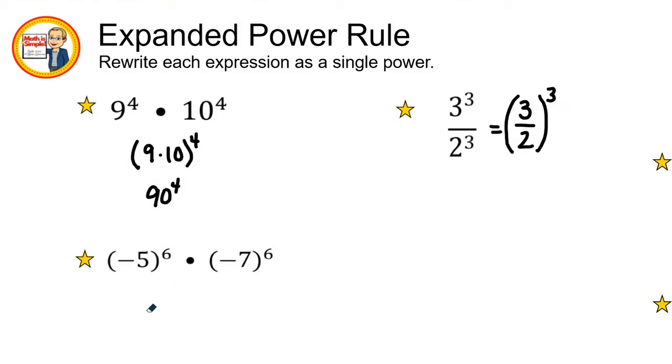Now let's look at the next one below. We have a negative five raised to the sixth power times negative seven raised to the sixth power. They're both to the sixth power.